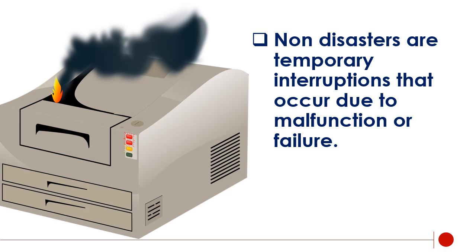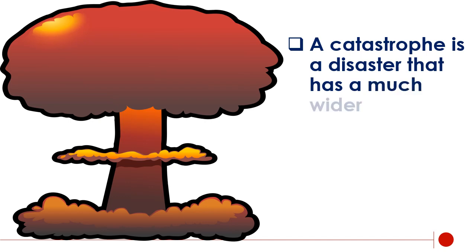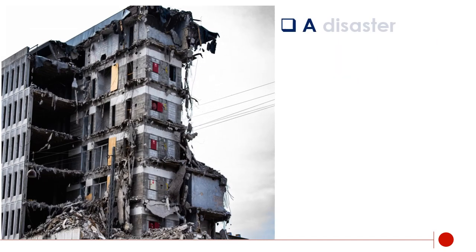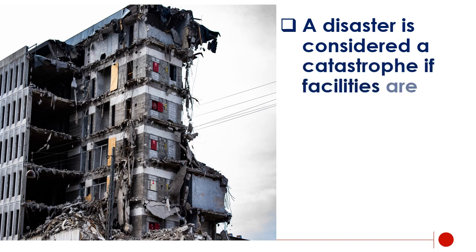Non-disasters are temporary interruptions that occur due to malfunction or failure. Non-disasters might or might not require public notification and are much easier to recover from than disasters or catastrophes. A catastrophe is a disaster that has a much wider and much longer impact.